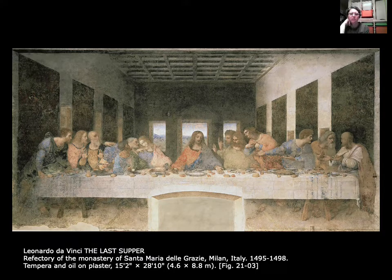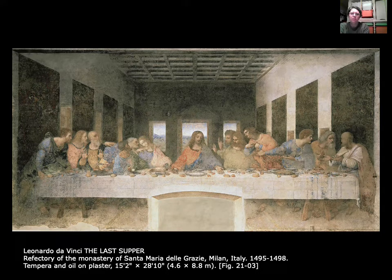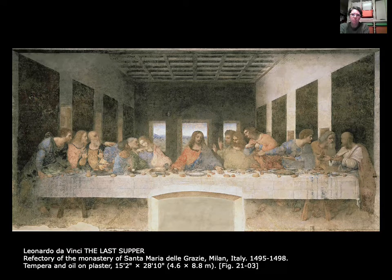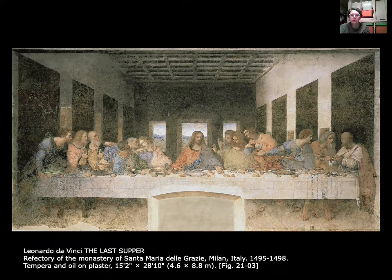Da Vinci used an experimental technique to create the fresco. Fresco is typically made of water-based plaster and tempera — tempera is egg-based and mixes well with plaster. Unfortunately, da Vinci really wanted to use oil paints, and he decided to try mixing oil paints with the fresco plaster material. It didn't work — the paint bubbled up, and the water in the plaster and the oil in the paint separated. He had to go back and refinish it several times, and it has been restored a couple of times since.